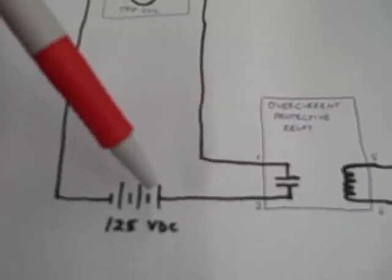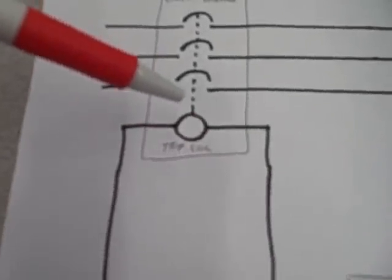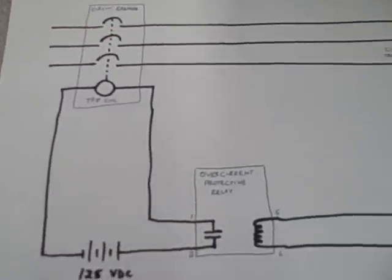Then that contact closes, sends 125-volt DC power to the trip coil on the circuit breaker, causing the circuit breaker to trip and to interrupt power in the three-phase system.